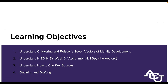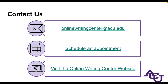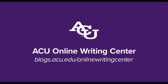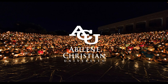So we went through Chickering and Reiser's seven vectors of identity development, looked at how they manifest in this assignment, talked about how to cite the key sources and write about it, and how to find additional information. And that is a wrap. If you have any questions, please feel free to send us an email at onlinewritingcenter.acu.edu or sign up for an appointment and give us any special questions or requests in the appointment notes. Have a good night.